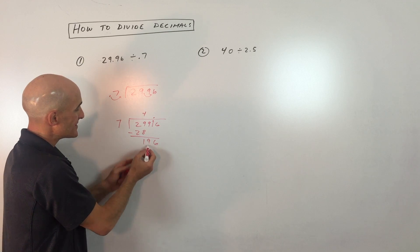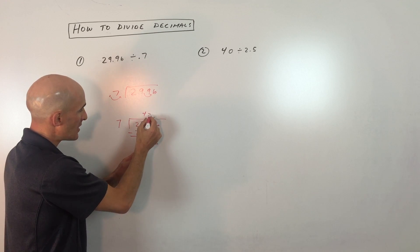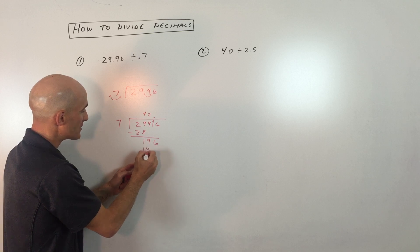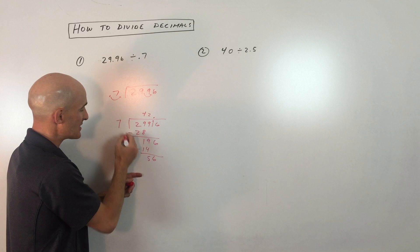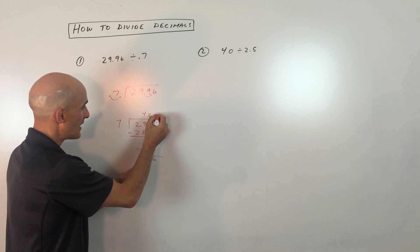Now 7 goes into 19 how many times? 2 times. Notice how I'm keeping these lined up. 7 times 2 is 14. Subtracting, that's 5, bring down the 6, that's 56. And 7 goes into 56 8 times.